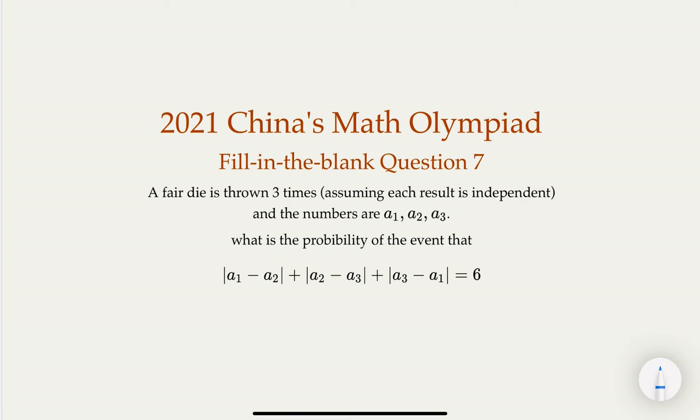All right, this is 2021 China's Math Olympiad, fill-in-the-blank question number seven. So here we're given a fair die, we're going to throw three times. We're going to get numbers, let's call them A1, A2, A3.